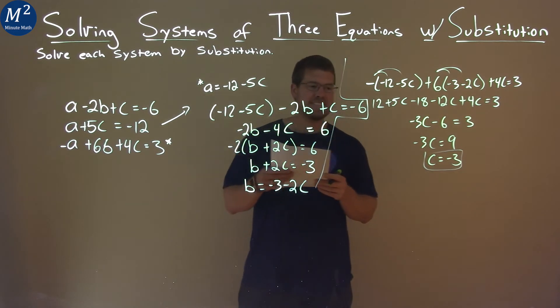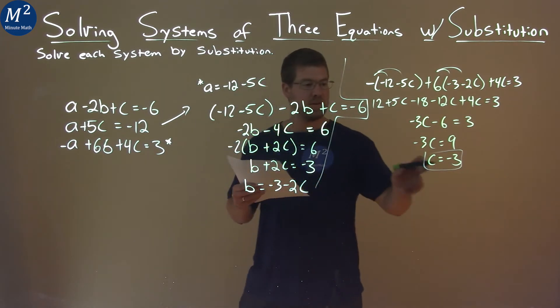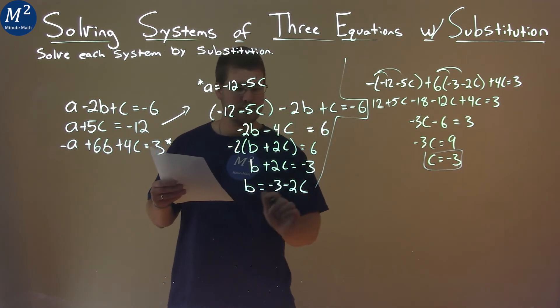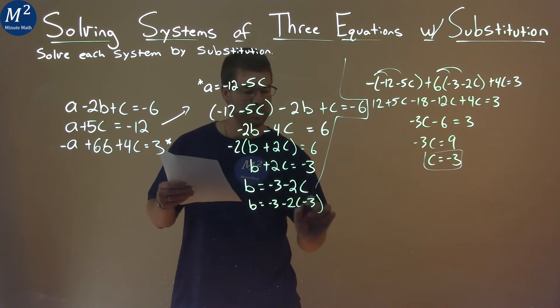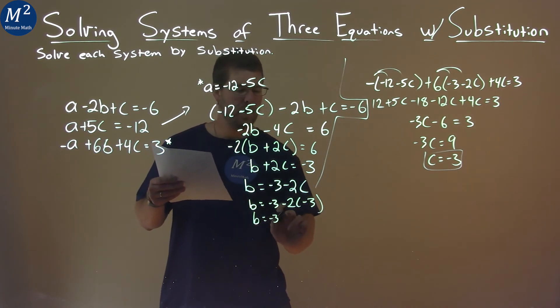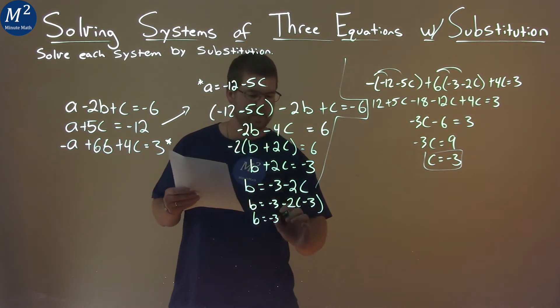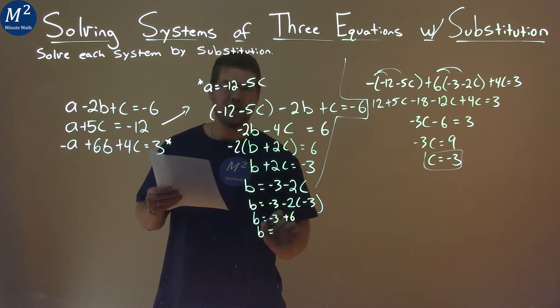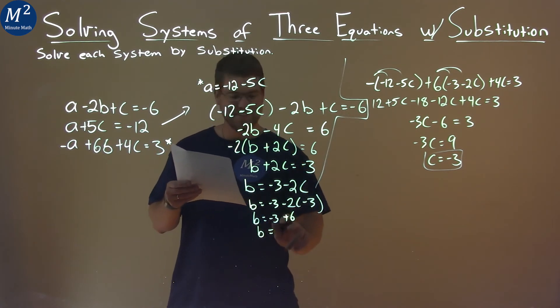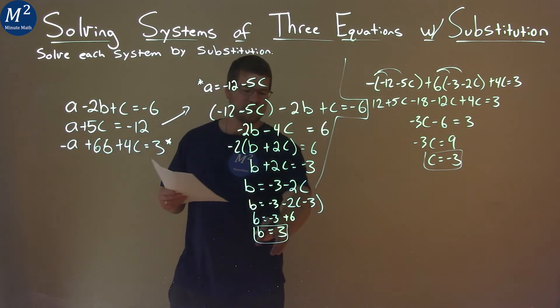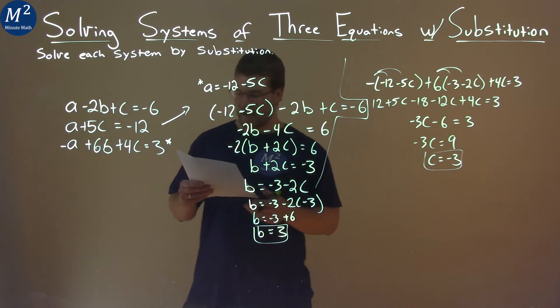So, we now have our C value. So, we use this now to find the other ones. So, let's go find our B value. Put negative 3 in for C. So, B equals negative 3 minus 2 times negative 3. Simplify that. Negative 3, negative 2 times negative 3 is a positive 6. And then, a little brain fart there. And negative 3 plus 6 is a positive 3. So, we have positive 3 right there. So, B is 3. C is negative 3.